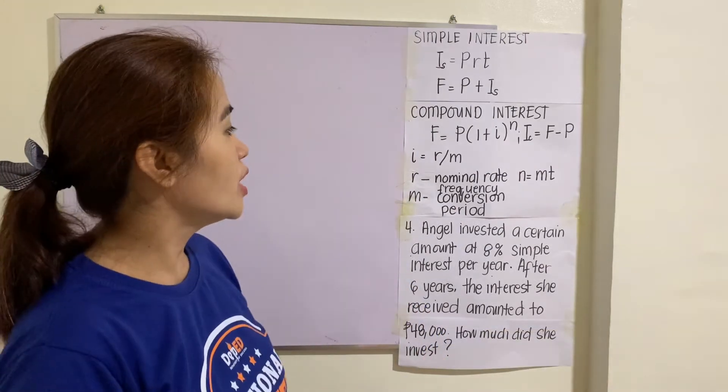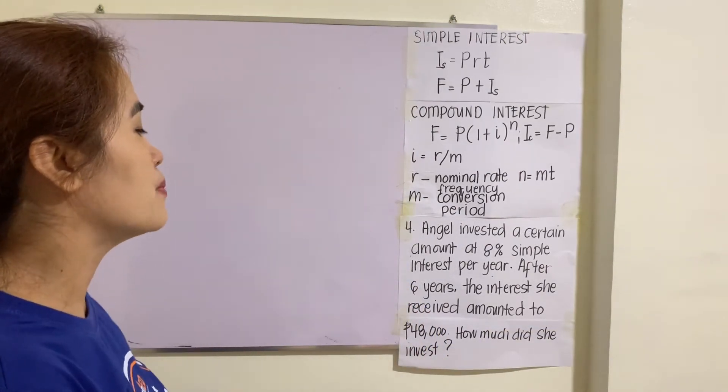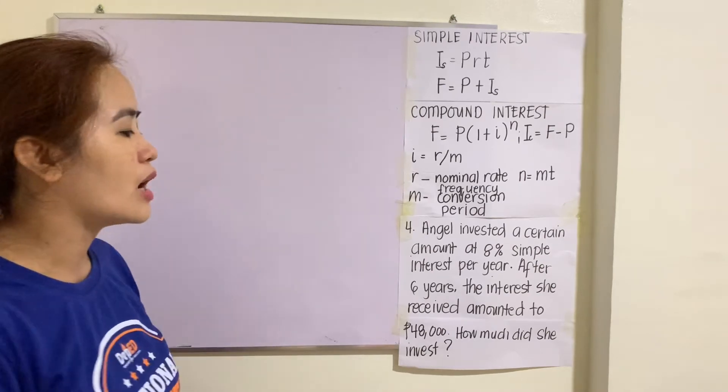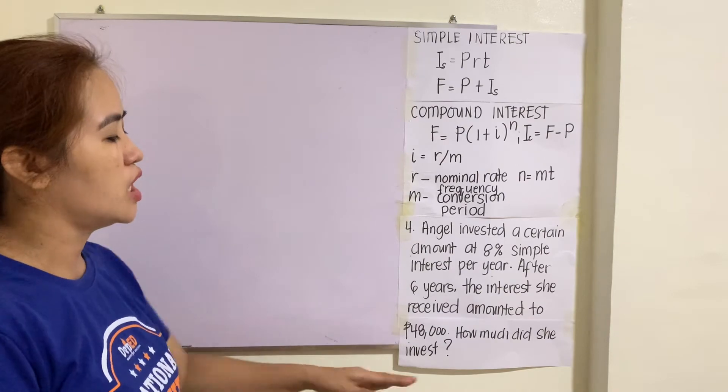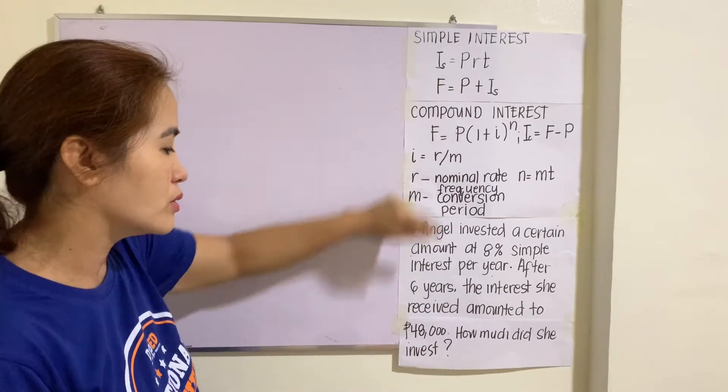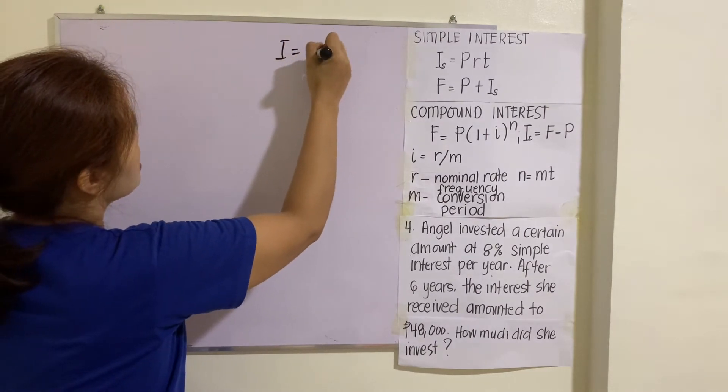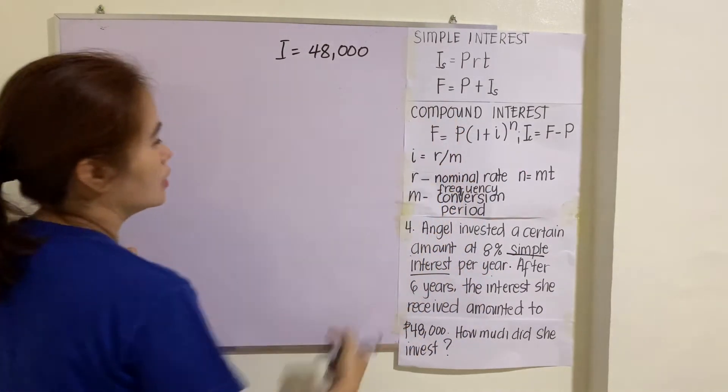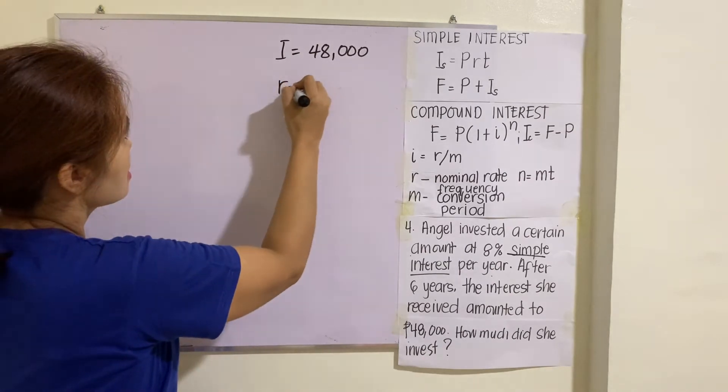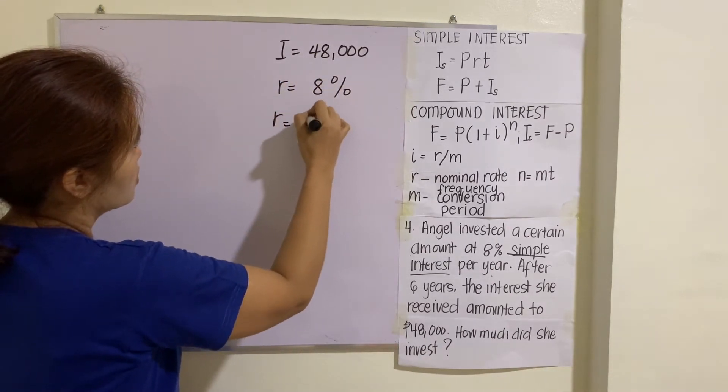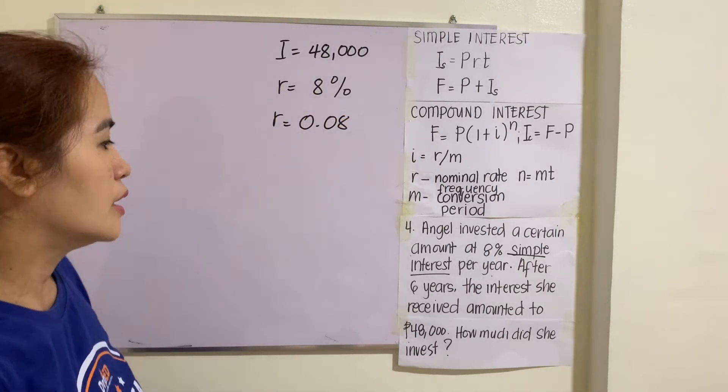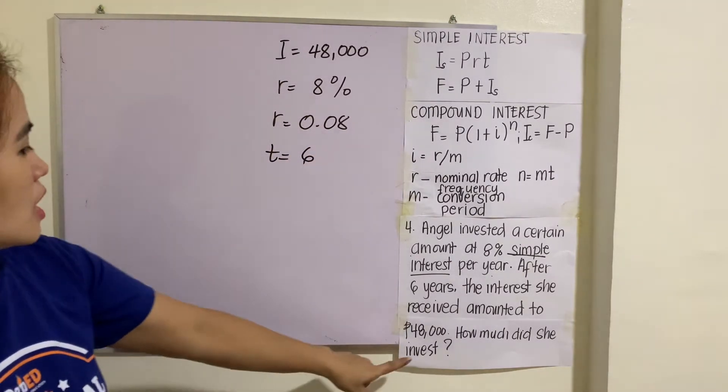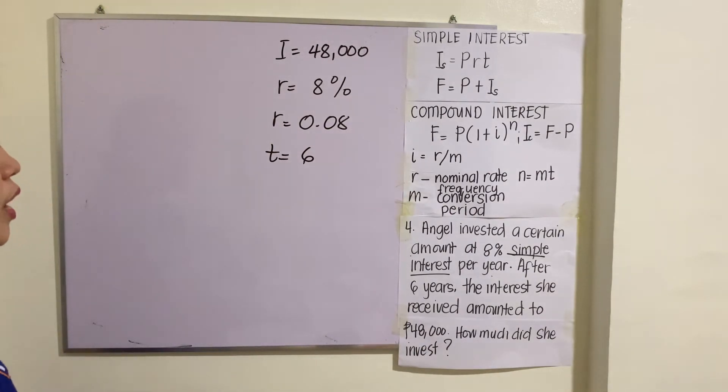Number four: Angel invested a certain amount at 8% simple interest per year. After 6 years, the interest received amounted to $48,000. How much did she invest? So the question here is what is the principal amount. The interest is given, it's $48,000. Of course, we will be using simple interest here. R = 8% = 0.08, and T = 6.